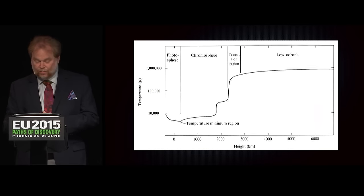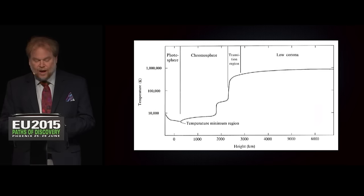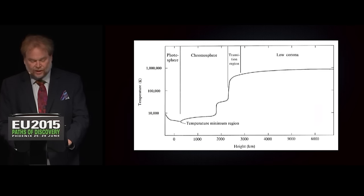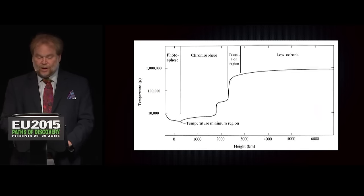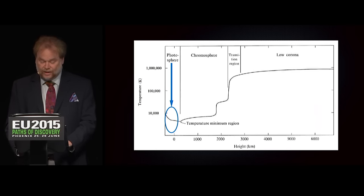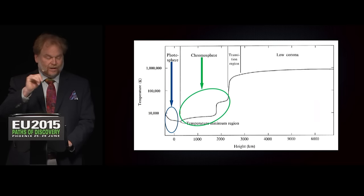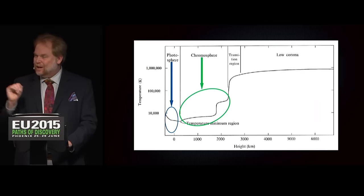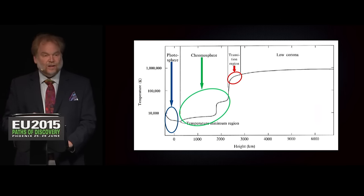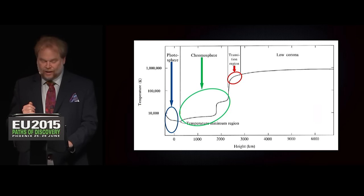This is one of the very confusing diagrams about the sun — a plot of the sun's temperature as a function of height above the sun's surface. At zero height, the photosphere is about 5,000 degrees. As we move away from the sun, the temperature increases in very specific jumps. And then at a certain point, the temperature shoots way up very quickly through the transition zone up to millions of degrees.